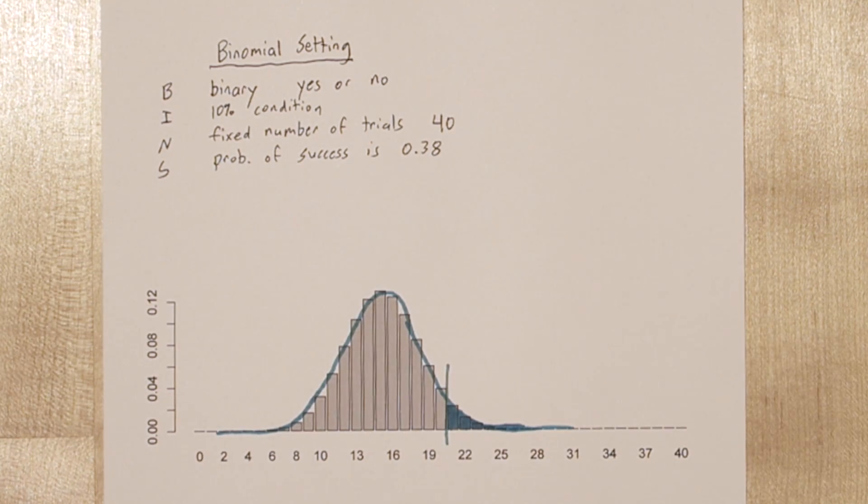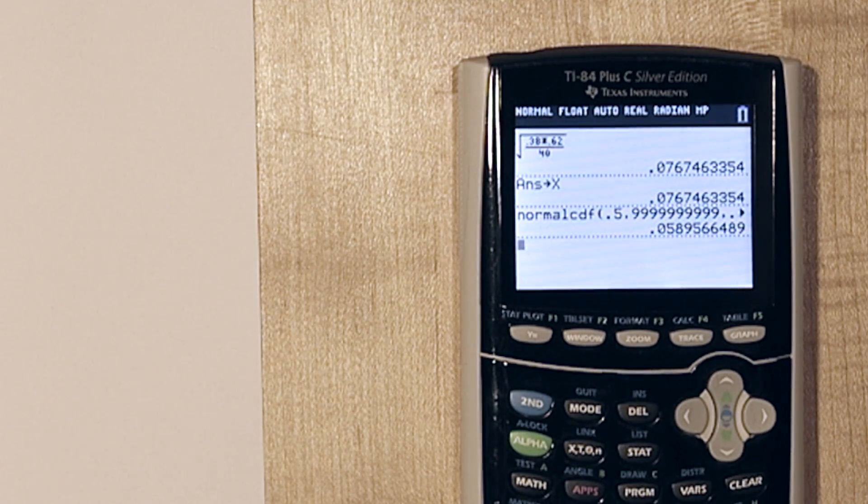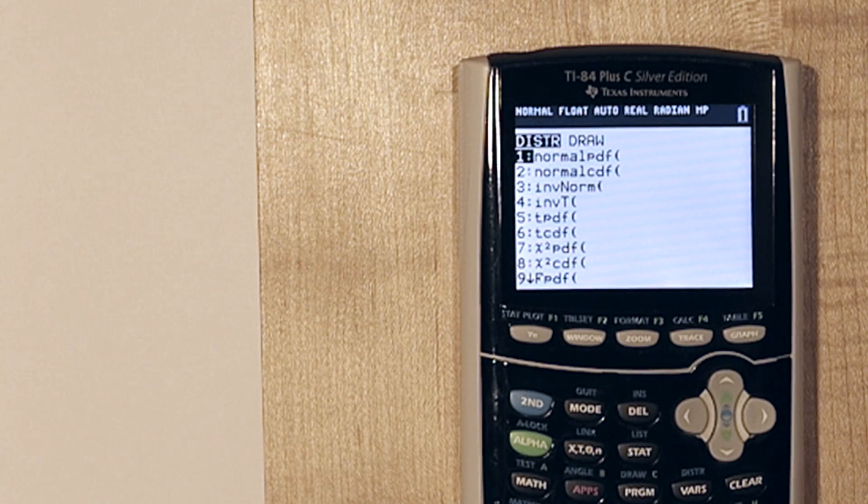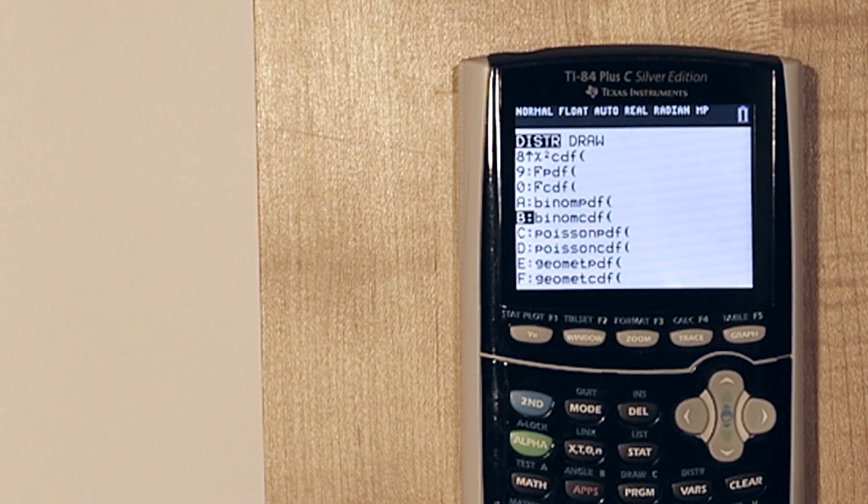So to figure out what the actual answer is, we can use binomcdf on our calculator, the binomial cumulative density function. If you press second, and then vars, and go to the very bottom, you'll find binomcdf.